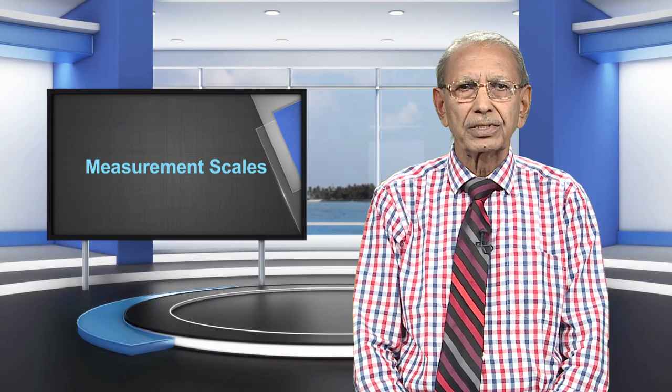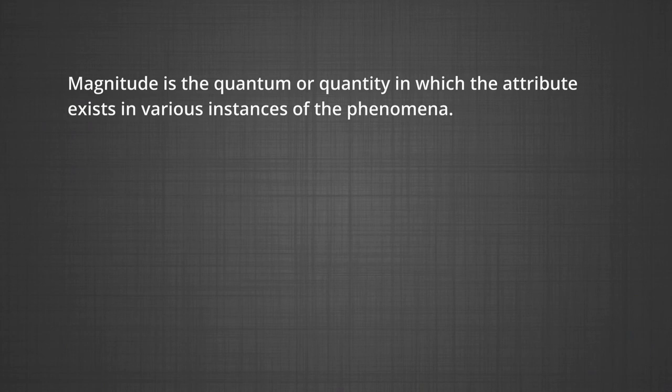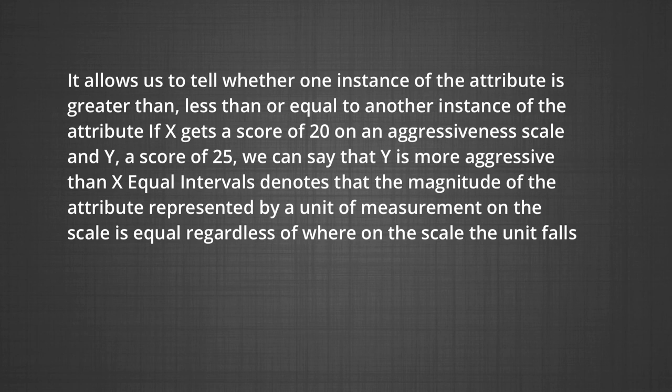A measuring scale should possess the following attributes and allow for logical manipulations. Magnitude is the quantum or quantity in which the attribute exists in various instances of the phenomena. It allows us to tell whether one instance of the attribute is greater than, less than, or equal to another instance of the attribute. For example, if X gets a score of 20 on an aggressiveness scale and Y gets a score of 25, we can say that Y is more aggressive than X.